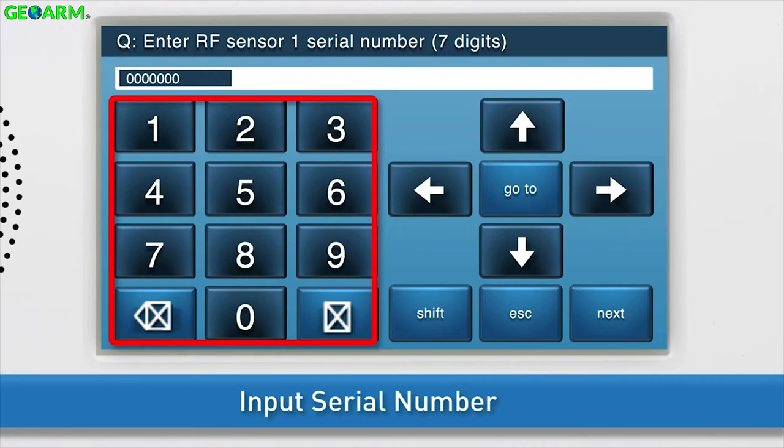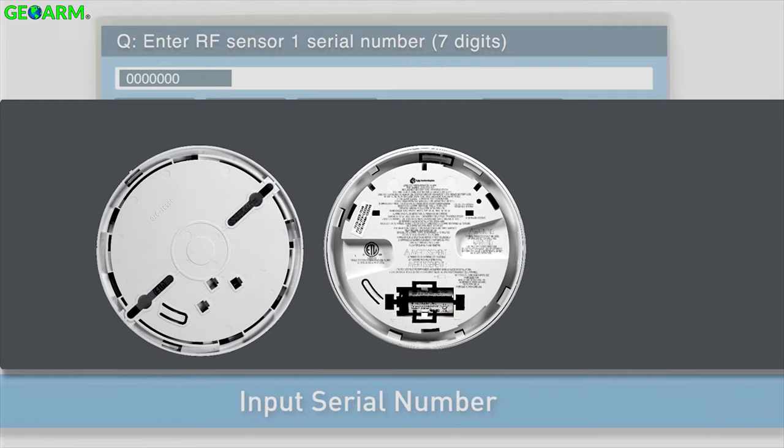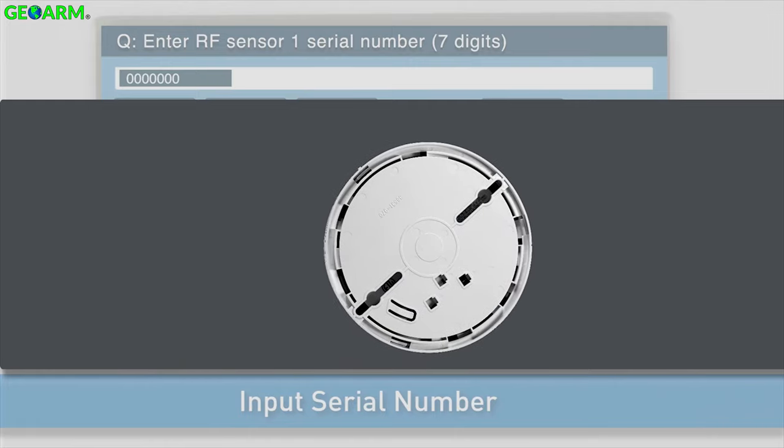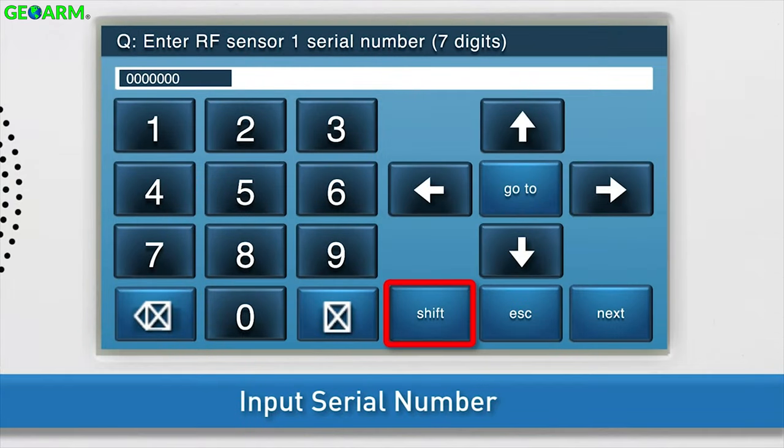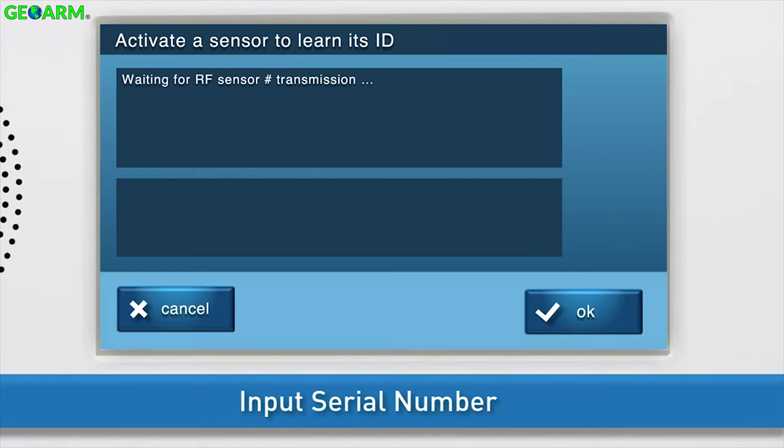You can either add the serial number with the panel's on-screen keyboard, or add it in wirelessly. If you choose to add the serial number wirelessly, first insert the battery, if you have not done so already, and then attach the mounting base and turn it clockwise to secure. Press SHIFT, then LEARN. You will see a message that the panel is waiting for the sensor transmission.